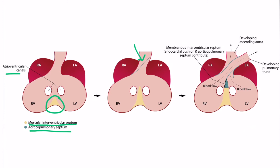Remember, in order for the aorticopulmonary septum to form, neural crest cells must migrate to this area. The aorticopulmonary septum forms and twists around, creating an outflow tract for the right ventricle and an outflow tract for the left ventricle — these will eventually become the pulmonary trunk and the ascending aorta. The muscular portion of the interventricular septum grew upward, and part of the aorticopulmonary septum fused with it, contributing to the formation of the membranous portion of the interventricular septum. So both the endocardial cushion and the aorticopulmonary septum contribute to the membranous interventricular septum.